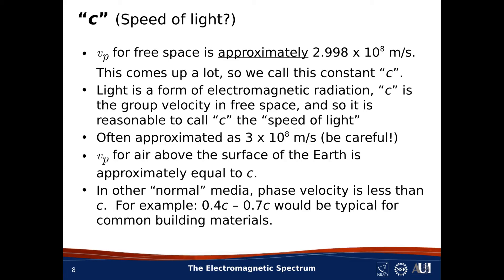You should know that C is often rounded to the value of 3 times 10 to the eighth meters per second. This rounding is usually okay, but every once in a while the error from rounding becomes significant. Often we are interested in the phase velocity for terrestrial propagation — that is, for EM waves propagating in air above the surface of the earth. The phase velocity in that case is very slightly smaller than C, so it is safe to assume that phase velocity for terrestrial propagation is C. EM can also propagate through materials other than free space and air — for common non-metallic building materials like glass and drywall, the phase velocity is typically somewhere between 0.4C and 0.7C, that is, between 40% and 70% of the speed of light.